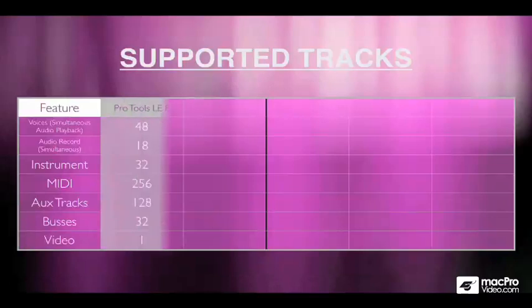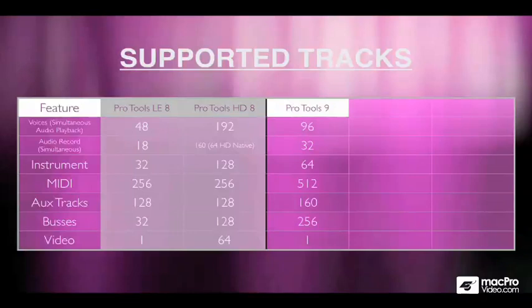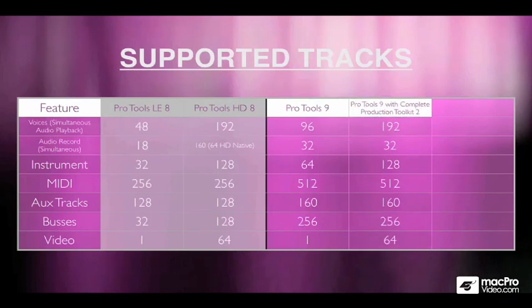The other major change is in terms of track counts. Here we can see the track counts for LE and HD version 8. In Pro Tools 9, we've doubled the number of simultaneous playback voices and drastically increased all the other track counts as well, so just about any computer can support a greater number of tracks. When you add on the Complete Production Toolkit, you double the voices again and also add 64 tracks of video.